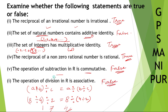So the operation of division in R is not associative. Only multiplication and addition are associative, and only multiplication and addition are commutative. That's all. Thank you so much. I hope you are able to understand. We will meet in the next video.